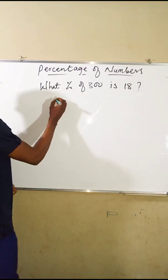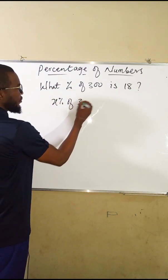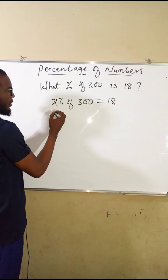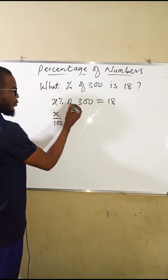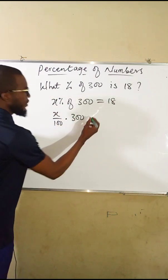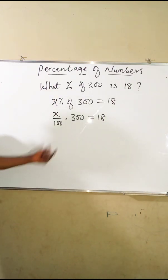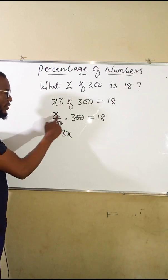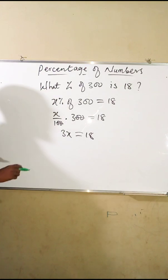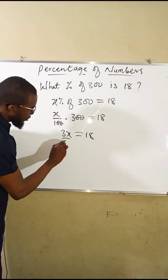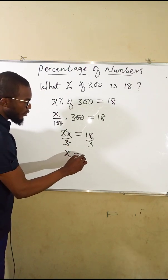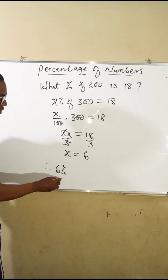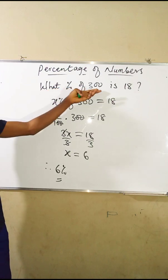We represent the unknown as X percent, so: X percent of 300 equals 18, which is written as X over 100 times 300 equals 18. Simplifying, the two zeros cancel with 300 to give 3X equals 18. Dividing both sides by 3, X equals 6. So the required percentage is 6 percent, confirming that 6 percent of 300 is 18.